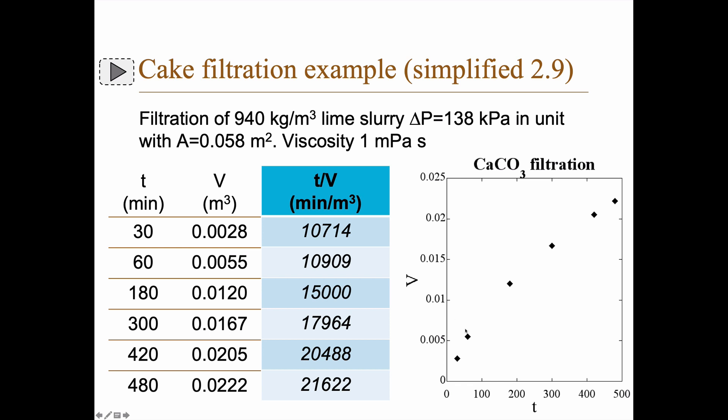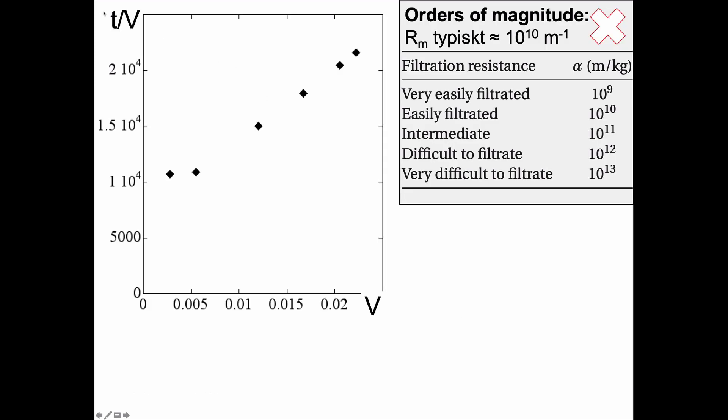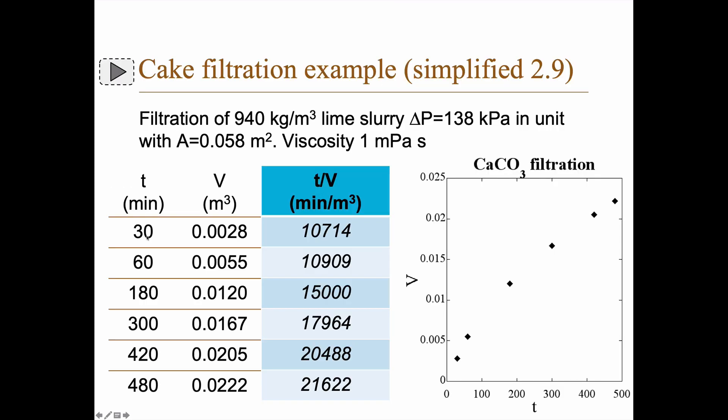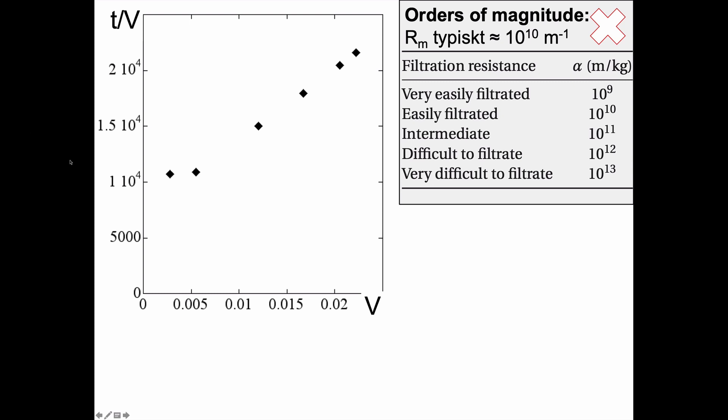So instead of plotting V against t, we instead plot t divided by V against V. Note here that there is no time zero here, because if you use zero then t divided by V becomes zero divided by zero which is not defined, so that's impossible.